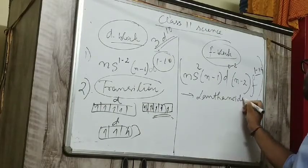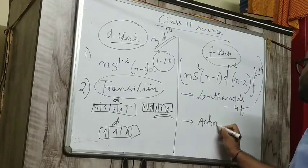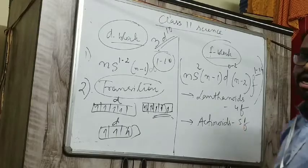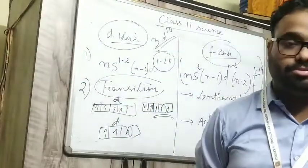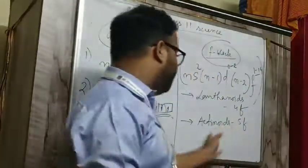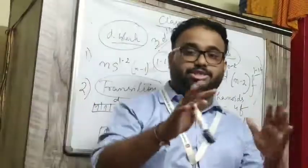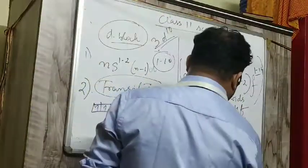F block elements has two series. One is lanthanoids which is four f, and actinoids which is five f. Lanthanoids and actinoids are radioactive in nature. Lanthanoids means lanthanum series, actinoids means actinium series. And the chemistry of f block elements is difficult to study because maximum of f block elements are radioactive in nature.